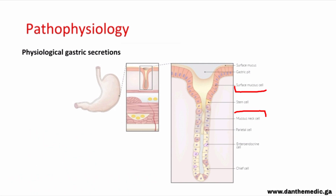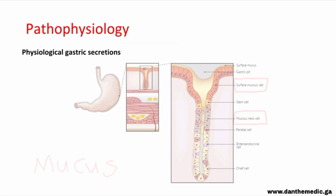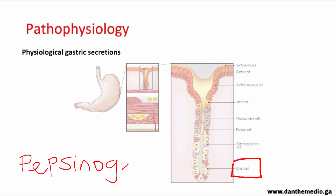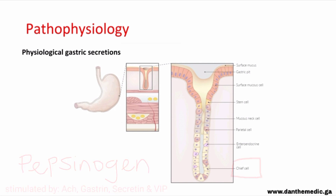The mucosal cells secrete protective mucus and are stimulated by acetylcholine, prostaglandins (which inhibit HCl), and secretin. The chief cells are responsible for secretion of pepsinogen and are stimulated by acetylcholine, gastrin, secretin, and vasoactive intestinal polypeptide.